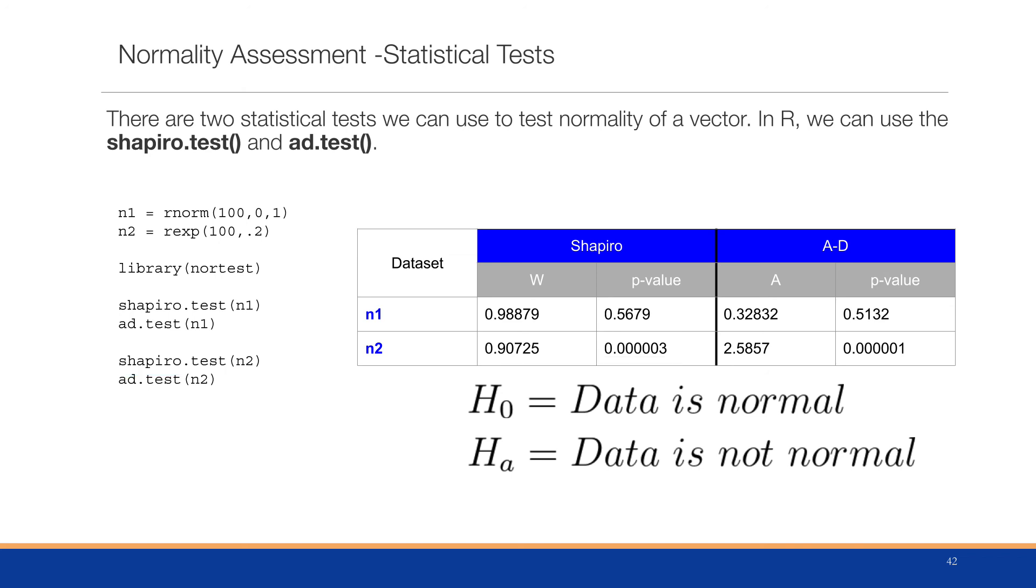You'll notice that in the Anderson-Darling test, we're getting similar results. p-value for n1 is 0.51, so we will not reject the null hypothesis. And the p-value for n2 is significantly lower than 0.05, so we will reject the null hypothesis.